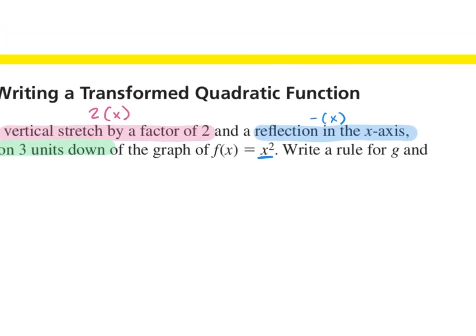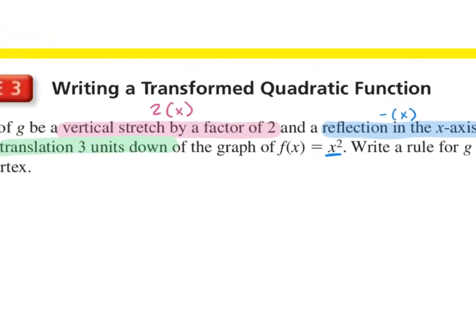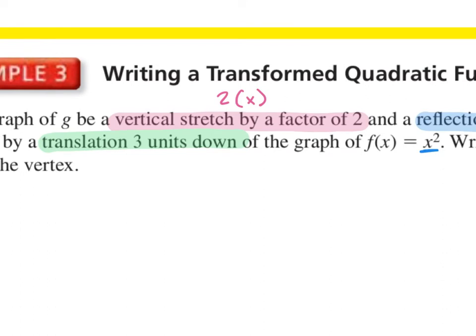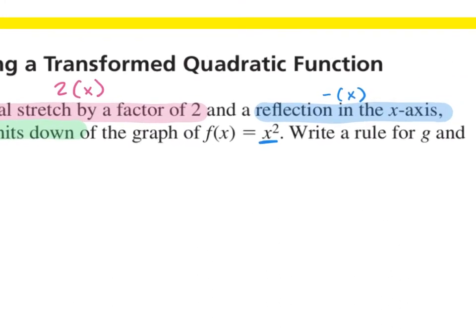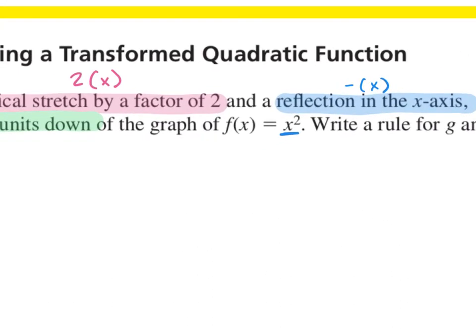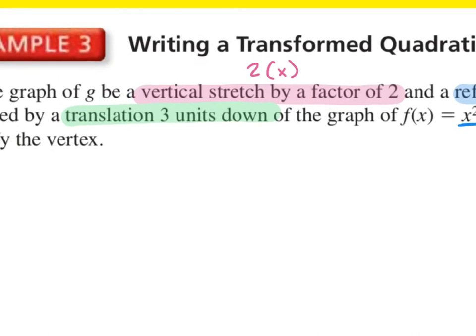If the negative is in the parentheses, it would be a reflection on the y-axis. And then last, we have a translation three units down. How do we show this? Minus 3 on the outside.